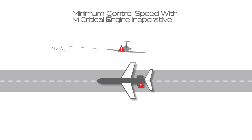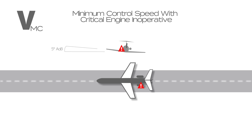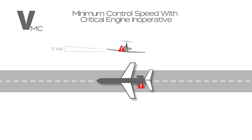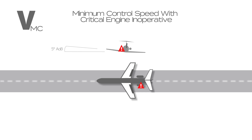Minimum control speed with critical engine inoperative is represented by VMC. Similar to VMCA, this is the minimum speed at which the aeroplane can be controlled with a 5 degree bank angle in the event of critical engine failure and the other engine at takeoff power. Unlike VMCA, VMC has a different speed depending on the aeroplane configuration such as flap setting, power setting, altitude, etc.